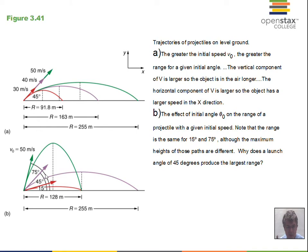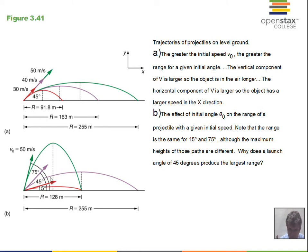The angle of launch also has an effect. With the same speed magnitude, launching at 15, 45, or 75 degrees gives different ranges. The optimum is 45 degrees — it's a compromise. At 45 degrees, sine of 45 equals cosine of 45, so the vertical and horizontal velocity components are equal. We get a medium amount of time in the air with the medium launch angle of 45 degrees.